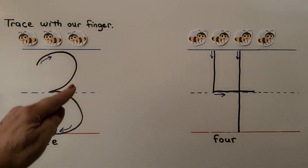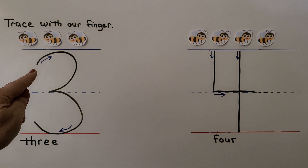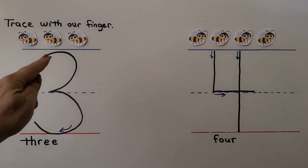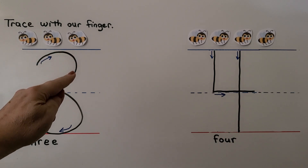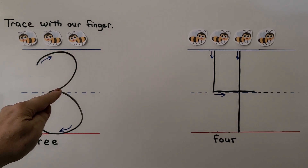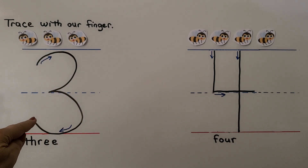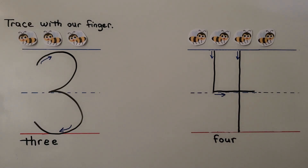For the left-handed students, we start here, we come around to the middle dotted line, and then we come around again and come up a little bit. Three.